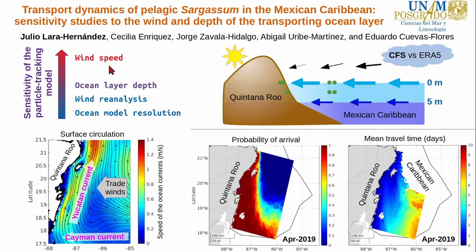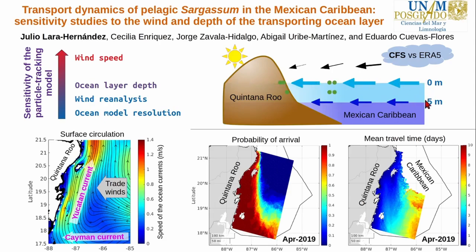Results show that the dragging of the particles by wind caused at least 10% more coastal strandings in Quintana Roo. Using the surface currents caused 3% more particle strandings than using the average currents of the top 5 meters, as the surface currents were faster and more shoreward than the deeper currents.